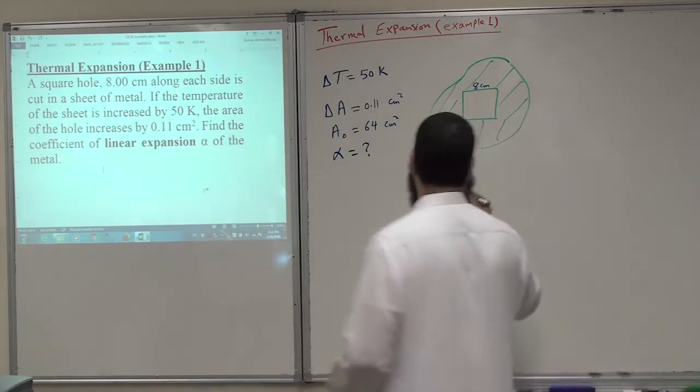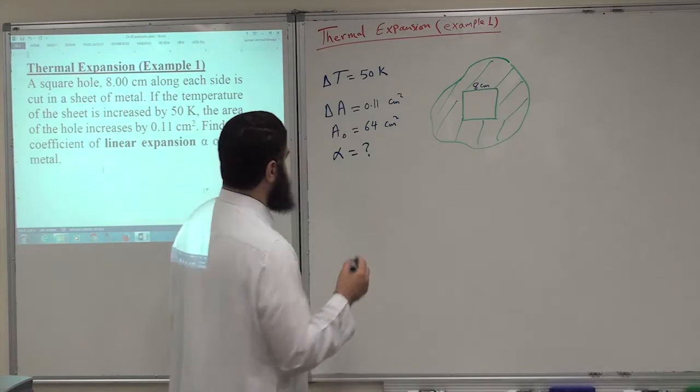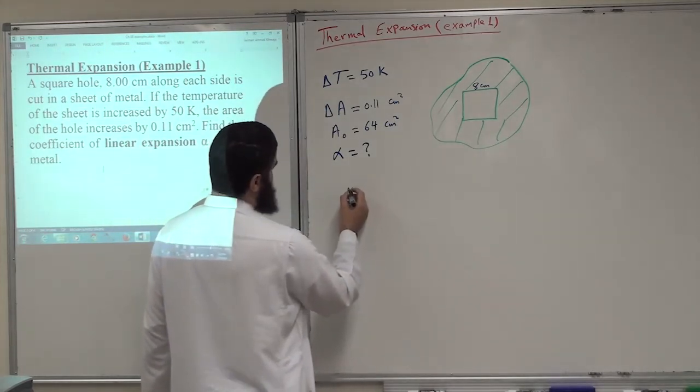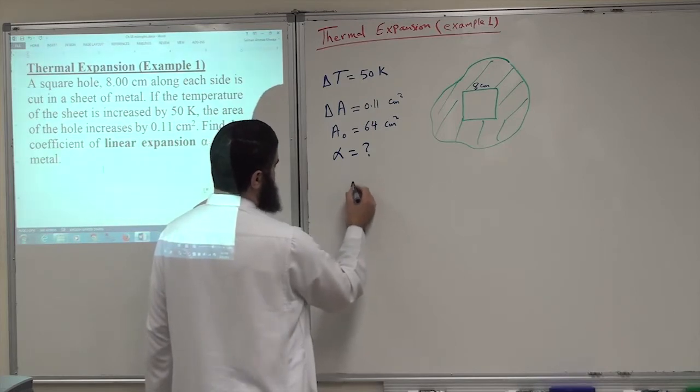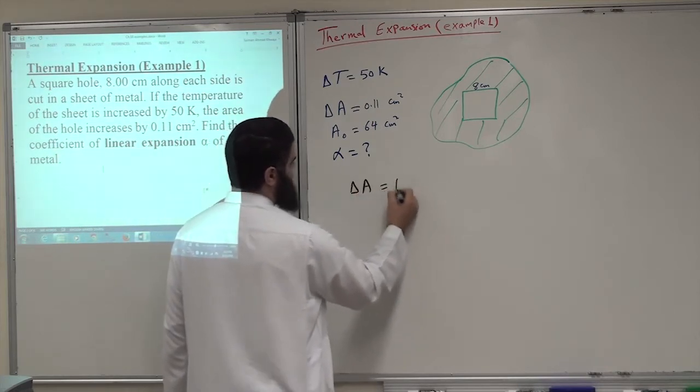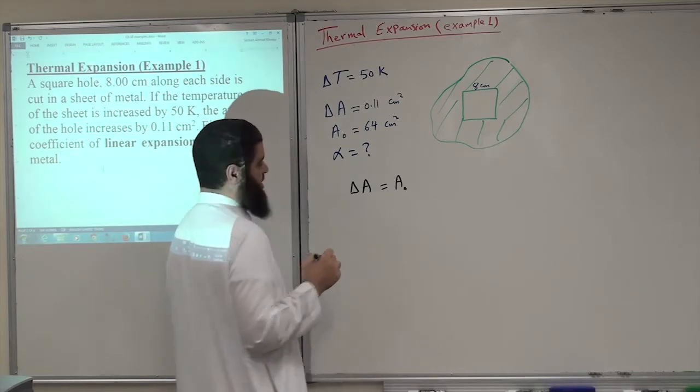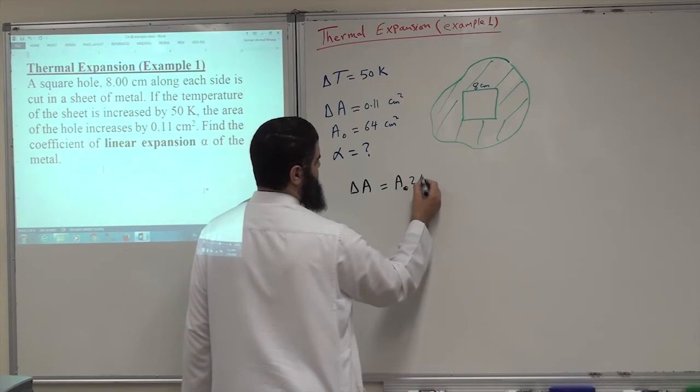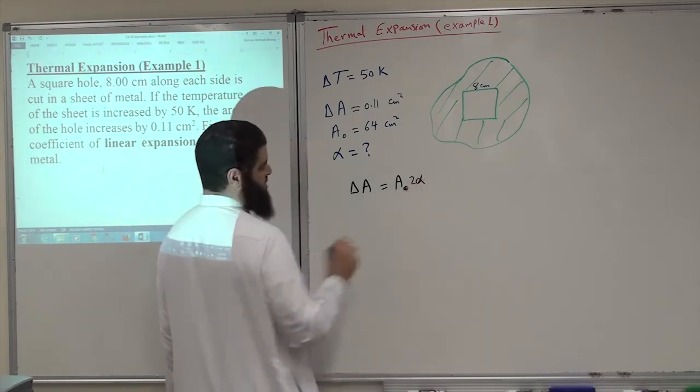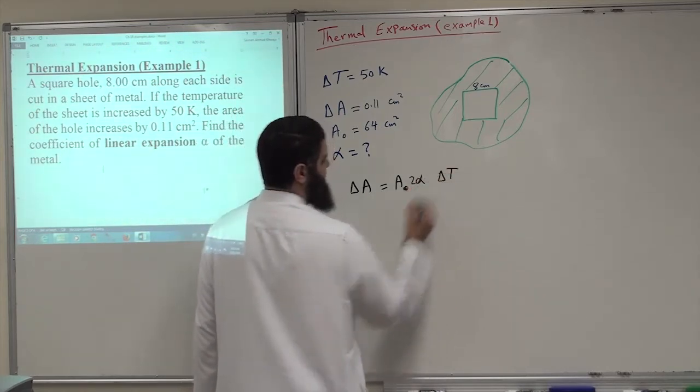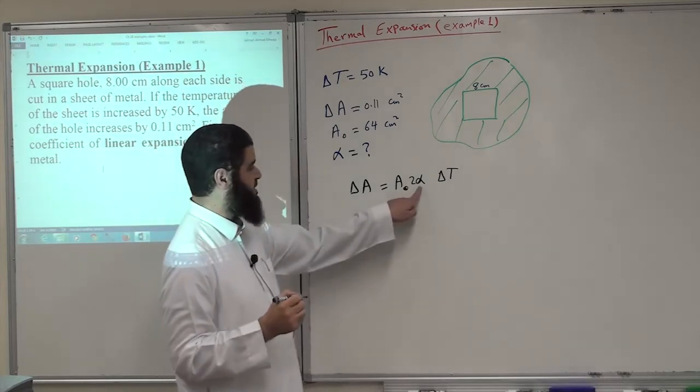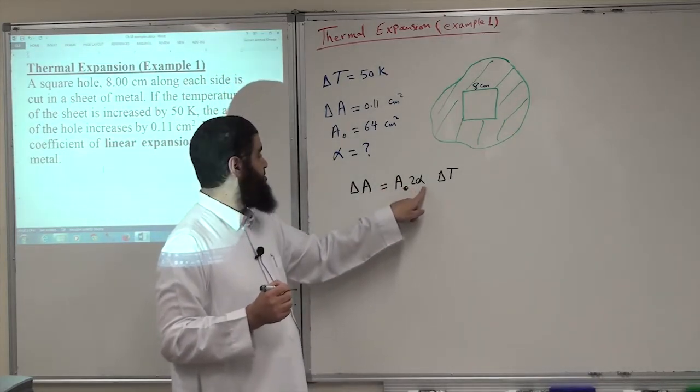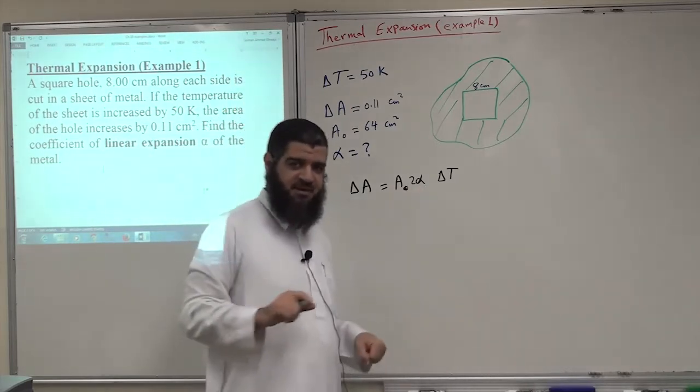So this is surface expansion upon changing the temperature of the object. So we should use delta A equals the original area multiplied by 2 alpha because this is surface expansion, multiplied by delta T. He's asking for this alpha. Why did I choose 2 alpha? Because this is surface expansion.